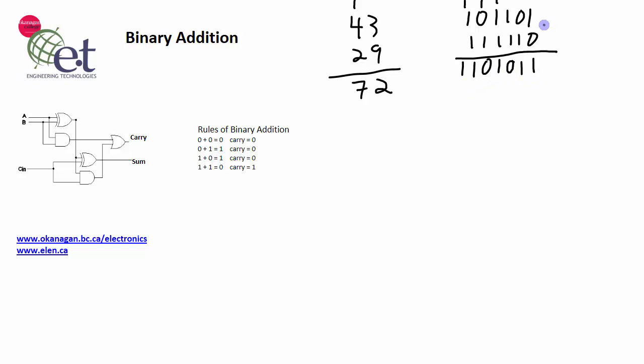Now a good thing that you can do to double check your answer, especially when you're new to binary addition, is to convert the numbers back into decimal form and do the decimal addition and see if you get the same answer as you do when you convert the answer back into decimal form. So the number 101101, that is equal to 45.